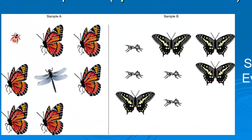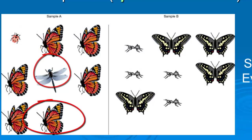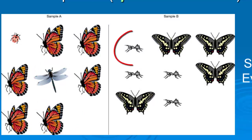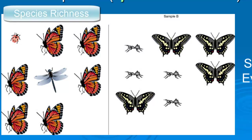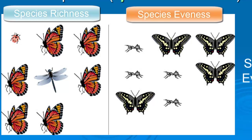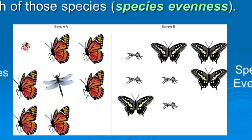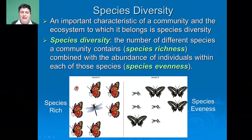Let's take a look at two sample plots. In sample A we have four different arthropods: a ladybug, a dragonfly, and some butterflies. In sample B we only have two different arthropod species — ants and butterflies. Because sample A has more species we can say that it is more species rich, whereas in sample B the species are much more even — there's an equal number of ants and butterflies. Sample A is much less even because there's an extraordinary number of butterflies in that particular sample.